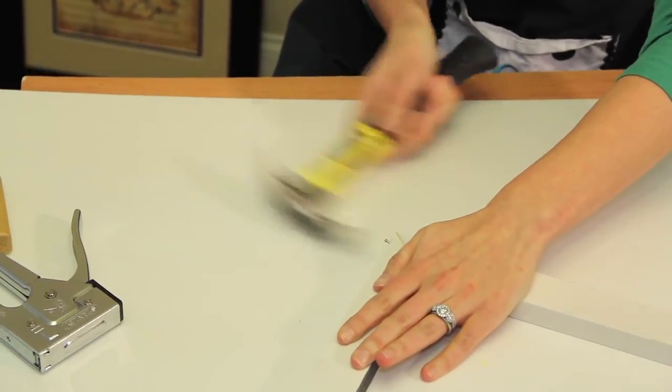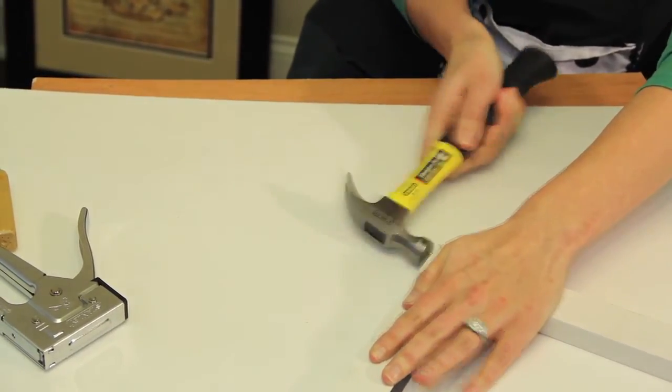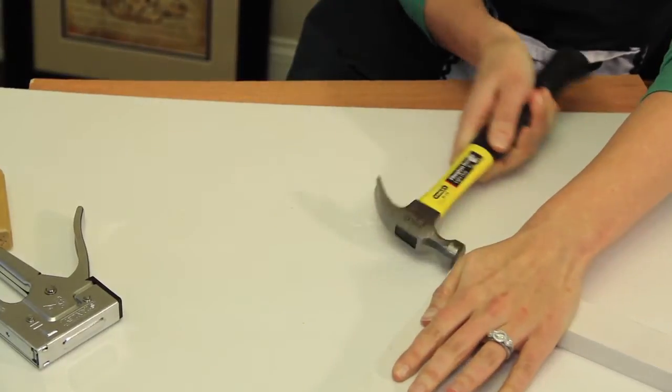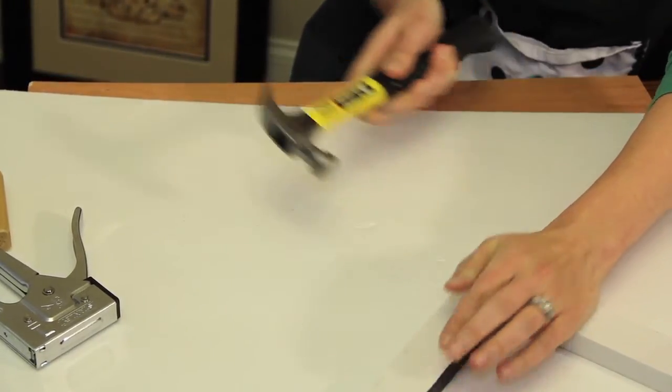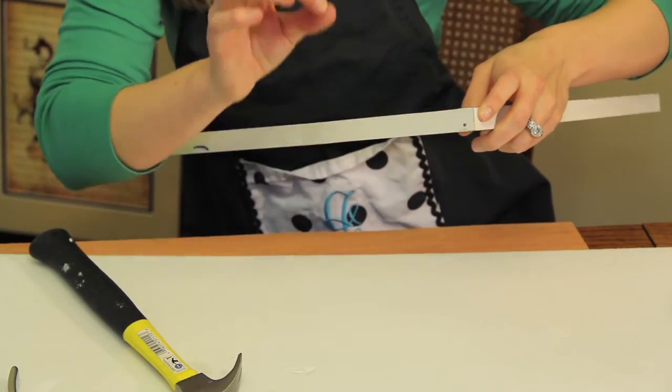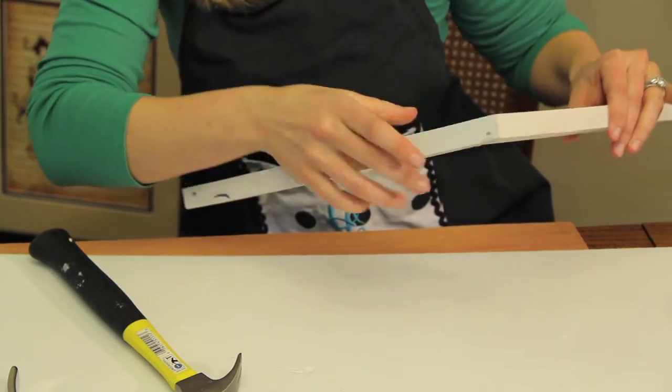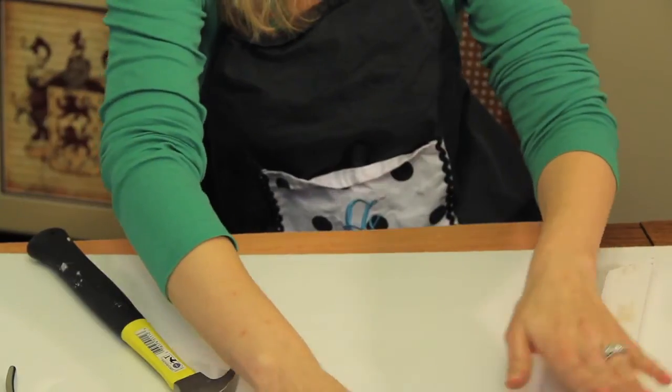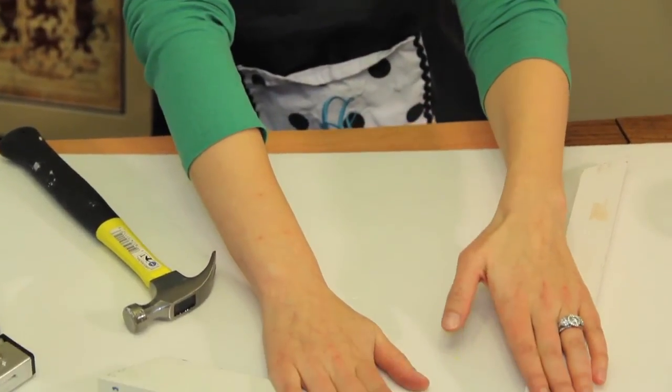So make sure that your finishing nail is flush with the wood so that it doesn't show. If your wood is a specific color you can always touch it up with a pen or with wood touch up and then you have your finished reinforced picture frame corners.